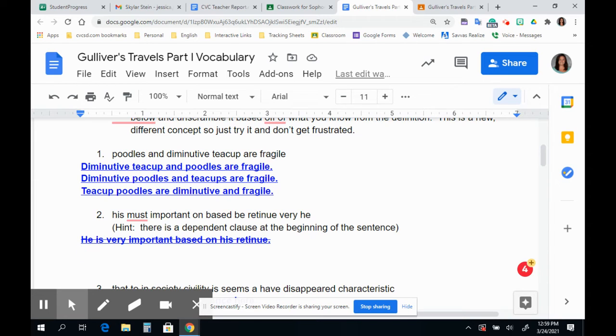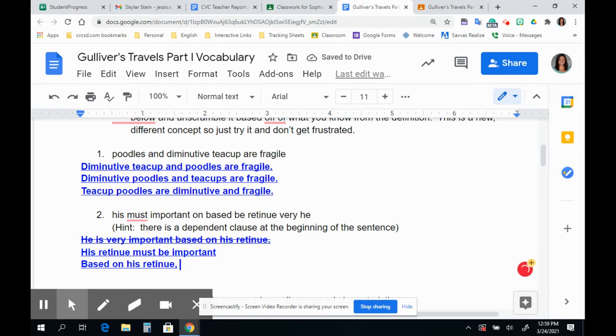We might say he, no, we can't even do that because there's no is. Can we say his retinue must be important? Nope, that doesn't work either. Let's try something else. What if we used based as our first word? So based usually is followed by on. So based on what? Based on, we're talking about retinue. So why don't we say based on his retinue? So there's my dependent clause. What about based on his retinue?